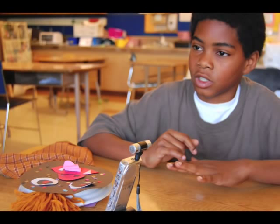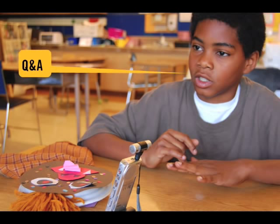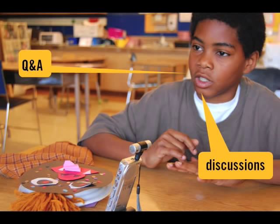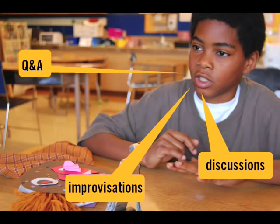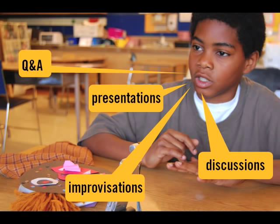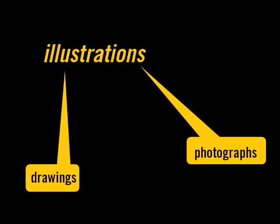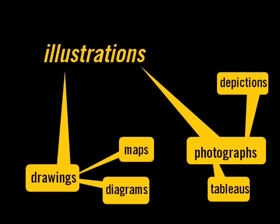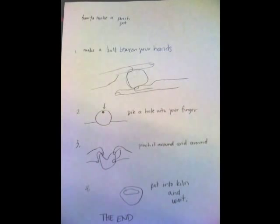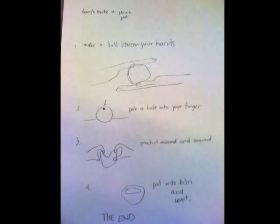Another form your collected samples might take is audio recorded samples. To capture verbal communication skills, consider asking students a set of questions relevant to the learning or understanding you are hoping to achieve. Or capture part of a class discussion or improvisation. Perhaps your Right Brain experience will involve each child speaking, presenting, or performing in some way. Collected samples might also take the form of illustration — be it drawing, photography, or some other form of illustrative creation.